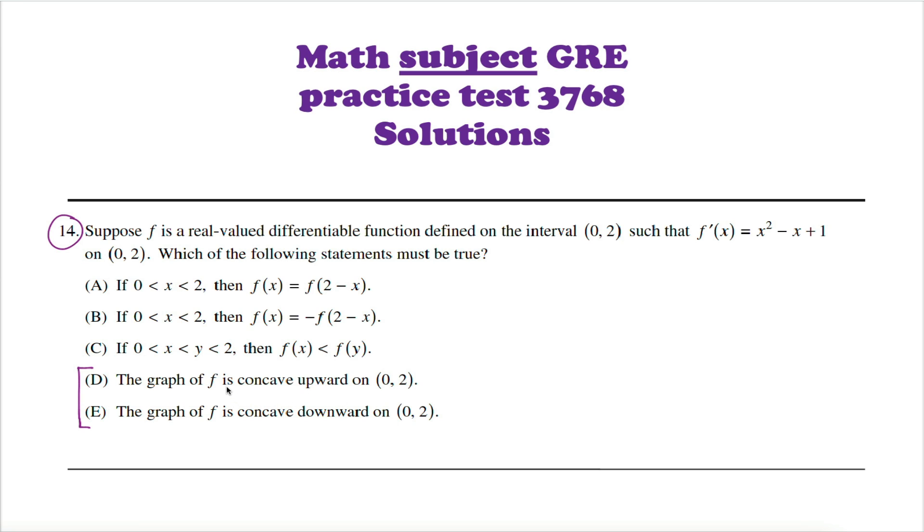The concavity of a function is completely determined by the sign of the second derivative. Recalling that our first derivative is a quadratic function, we know it's really easy to figure out our second derivative. Derivatives of polynomials are probably your favorite. Just glancing at this thing, I know I got 2x minus 1 as the derivative. So then I can just ask myself the question, is 2x minus 1 always positive or always negative on this interval from 0 to 2? And the answer is no.